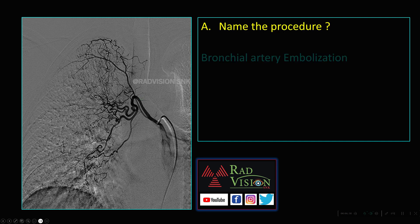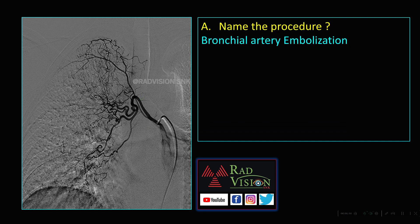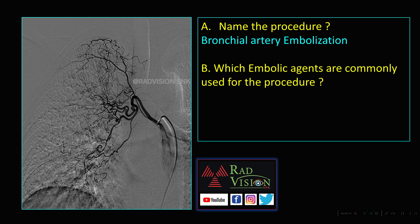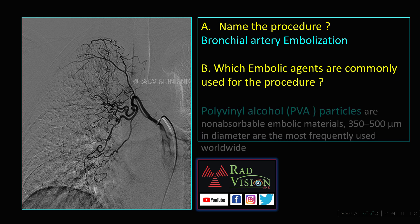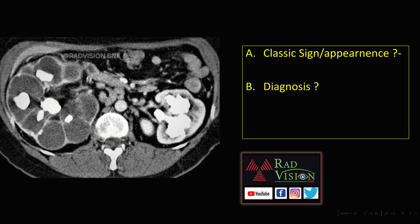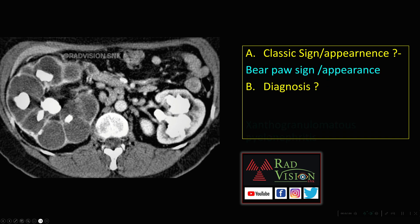What is this interventional procedure? This is bronchial artery embolization. A common question is which embolic agents are used: polyvinyl alcohol (PVA) particles, which are non-absorbable embolic agents of 350 to 500 micrometers in diameter, are most frequently used worldwide. Next, the classical bear-paw sign is seen in xanthogranulomatous pyelonephritis.